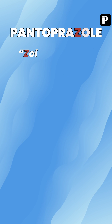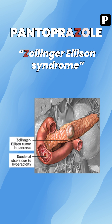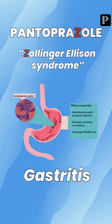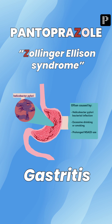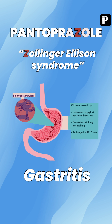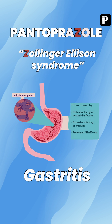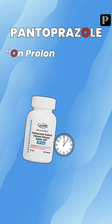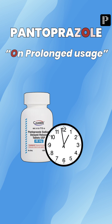The next letter is A — A for atrophic gastritis, if you are using them for very long periods. The next letter is Z — Zollinger-Ellison syndrome. Zollinger-Ellison syndrome is a condition where the gastrin levels are very high, leading to gastritis. PPIs are the drug of choice for that condition.